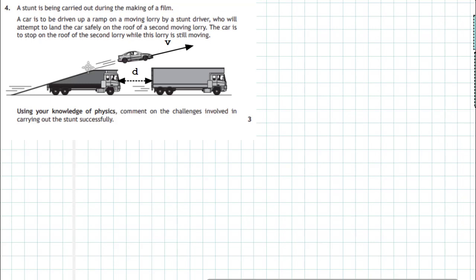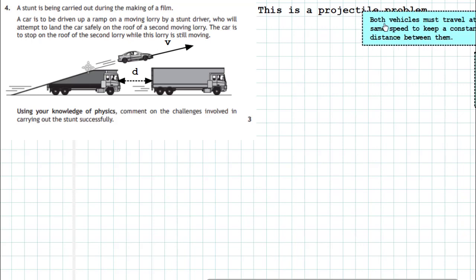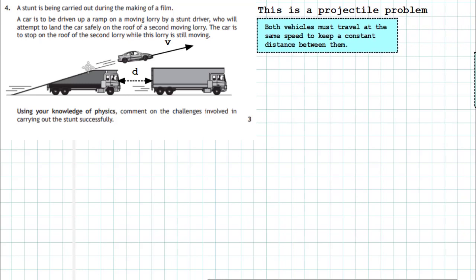Well the first one we have got to look at is that this really is a projectile problem, so think in terms of projectiles. Now the obvious thing is, the first challenge is that the two lorries must be kept the same distance apart. Both vehicles must travel at the same speed to keep a constant distance between them.